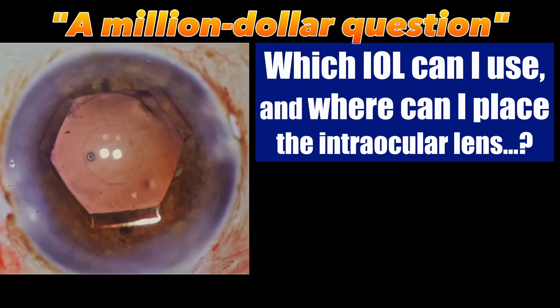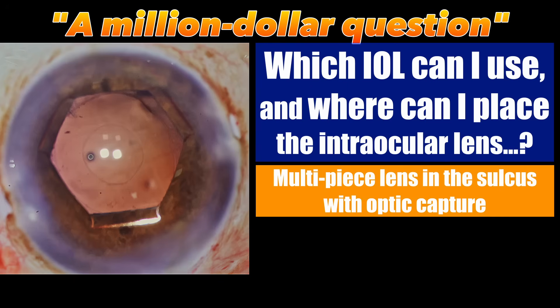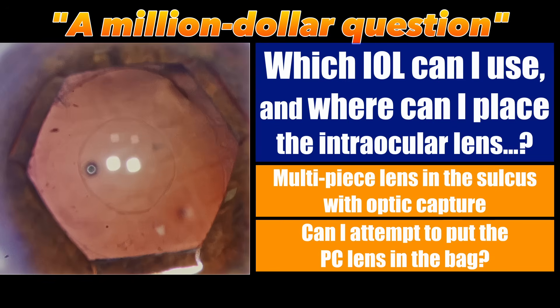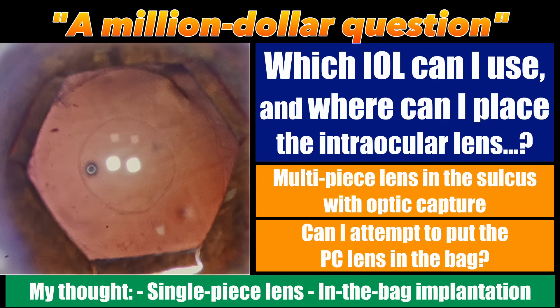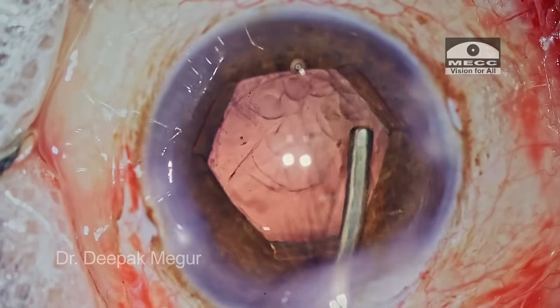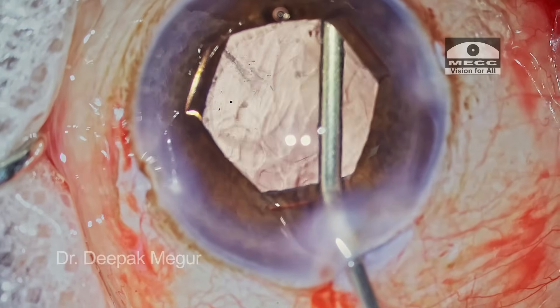The million dollar question: should I go in with a multi-piece lens and inject into the sulcus and then achieve an optic capture, or can I attempt in-the-bag posterior chamber lens implantation as well? Because the posterior capsule tear is so circular it looks almost like a fantastic posterior capsule rhexis, I thought in-the-bag implantation of a single-piece lens would be ideal. We have the single-piece hydrophilic lens that was originally planned for this patient.